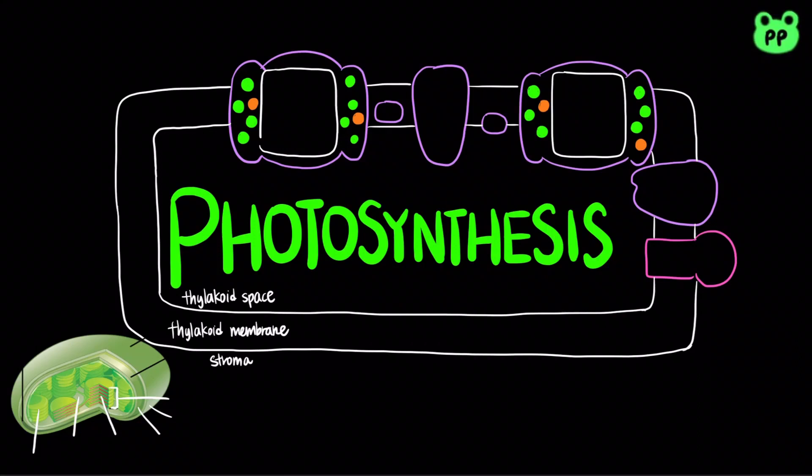Photosynthesis is the process that converts solar energy into chemical energy, which occurs in plants, algae, other protists, and some prokaryotes.